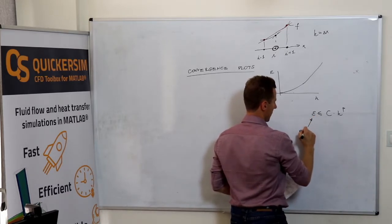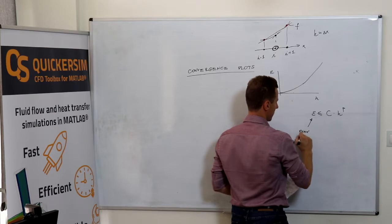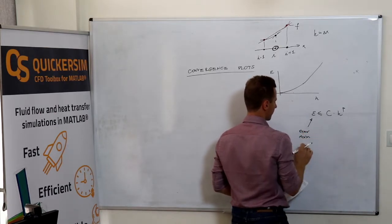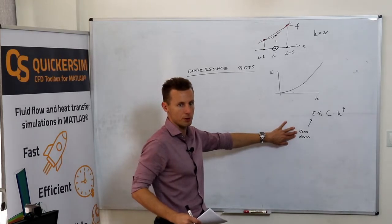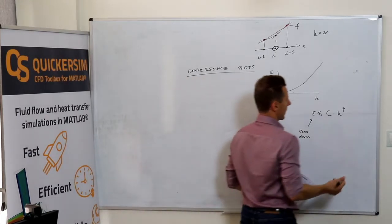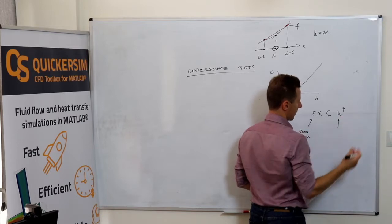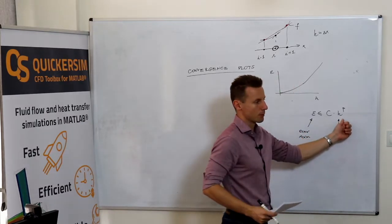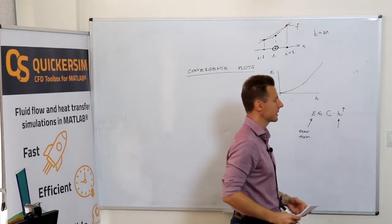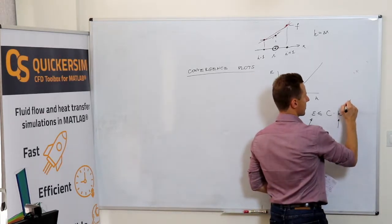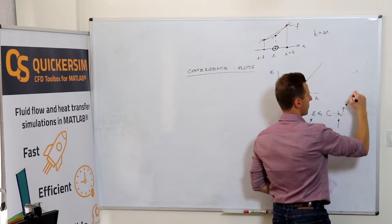This one is the error norm, actually any valid mathematical norm that you can select. This one is something that characterizes your discretization, let it be time discretization or space discretization. And this one, the exponent, is called method order.